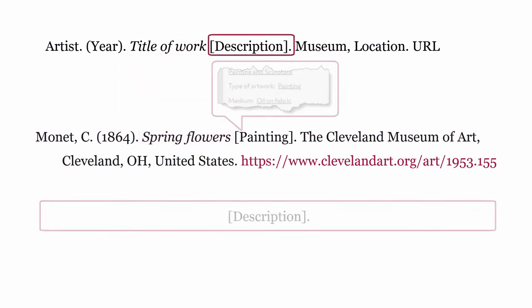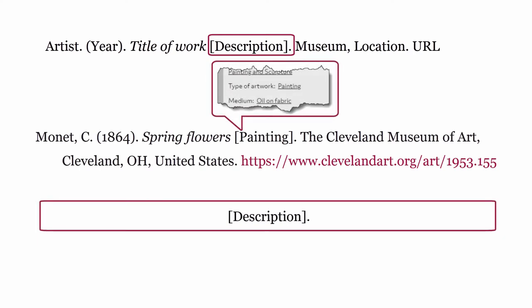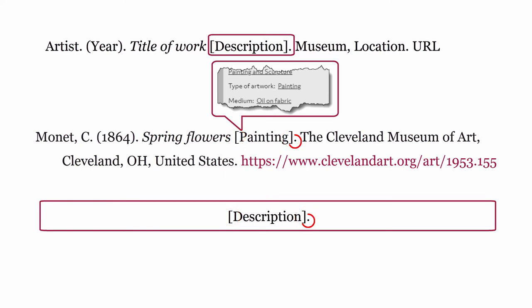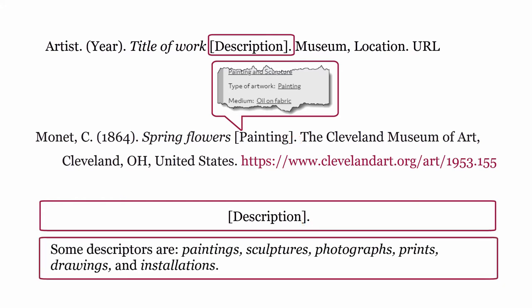Description: after the title, describe the work. Do this by including a description of the medium or format. The description is surrounded by square brackets and ends with a full stop. Some descriptors are: paintings, sculptures, photographs, prints, drawings, and installations.